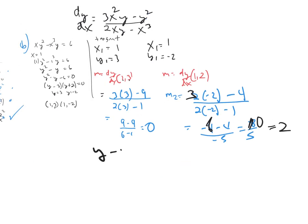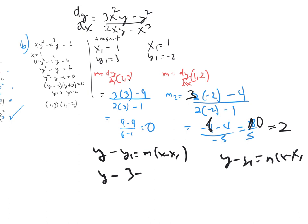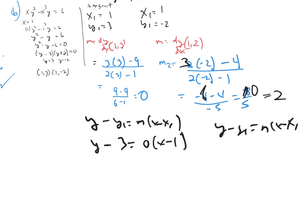Now I'm ready to write the tangent lines. The equation is Y minus Y1 equals slope times X minus X1. For the first point: Y minus 3 equals 0 times X minus 1. Zero times anything is zero, so that just means Y equals 3. It's a horizontal line. There's your first tangent line.